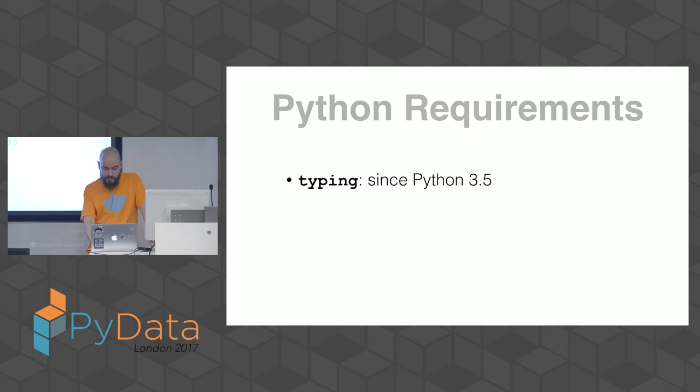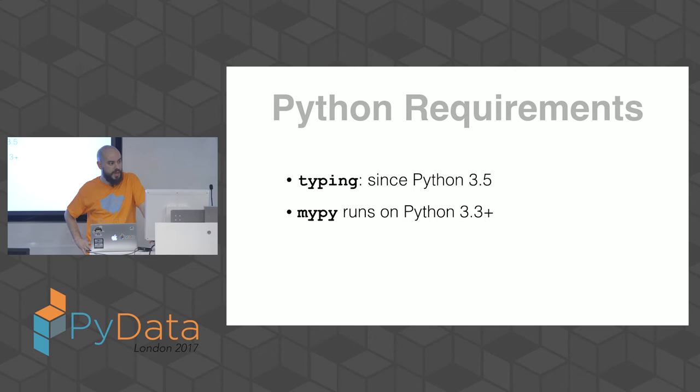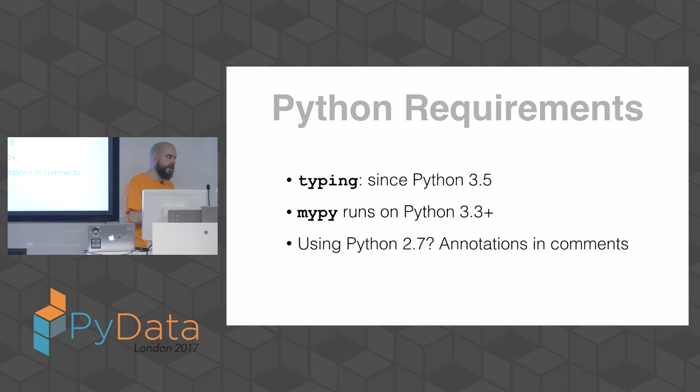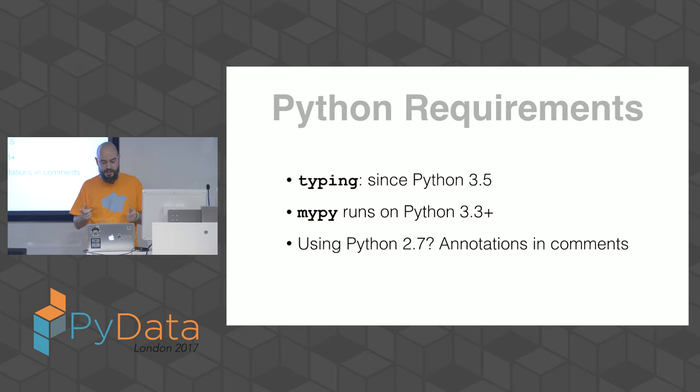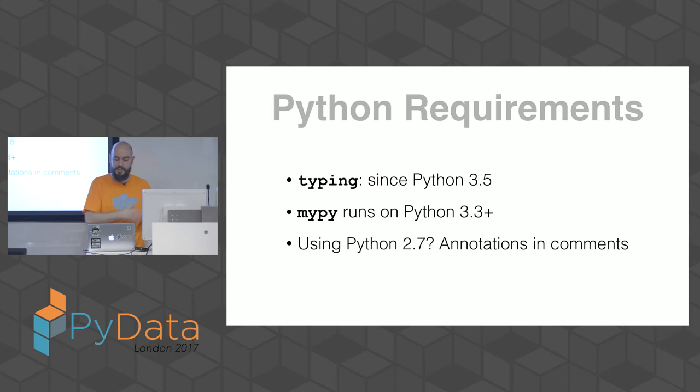The typing module requires Python 3.5. You can use Python 3.3+ to run mypy. For Python 2 code bases, annotations have to be written as inline comments rather than using the annotation syntax, and you integrate mypy with your build server running Python 3 to do static checking on your Python 2 code.